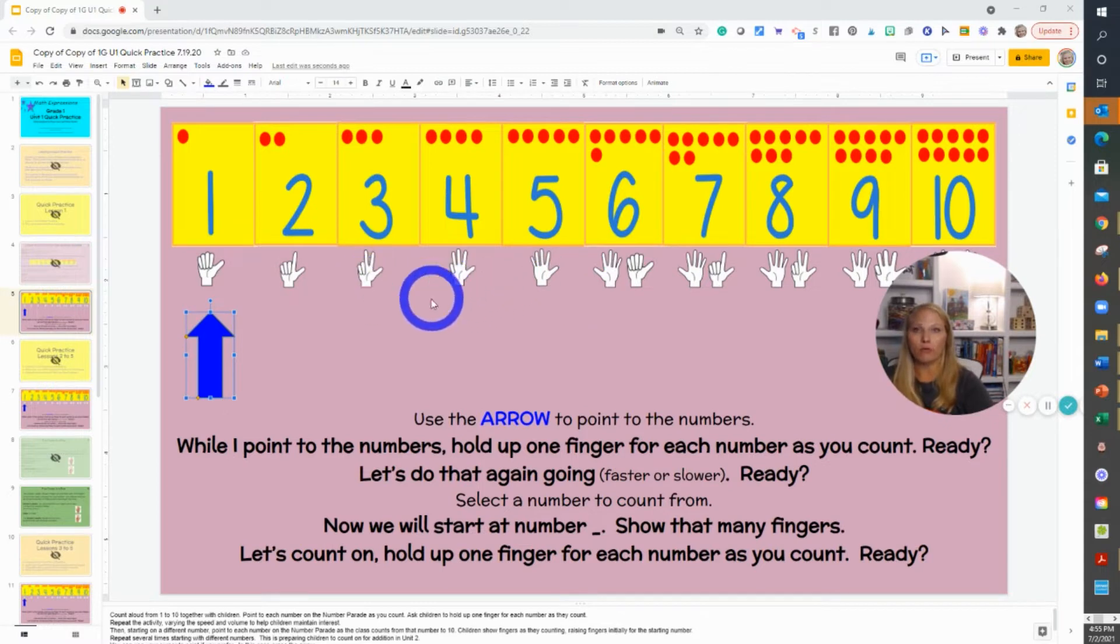This is more about rote counting because most kids can count to ten just by rote, but we're going to connect it now to: do they recognize the symbol and do they recognize the quantity on the card? So at first we're just introducing slow and fast, just to kind of get us all warmed up.